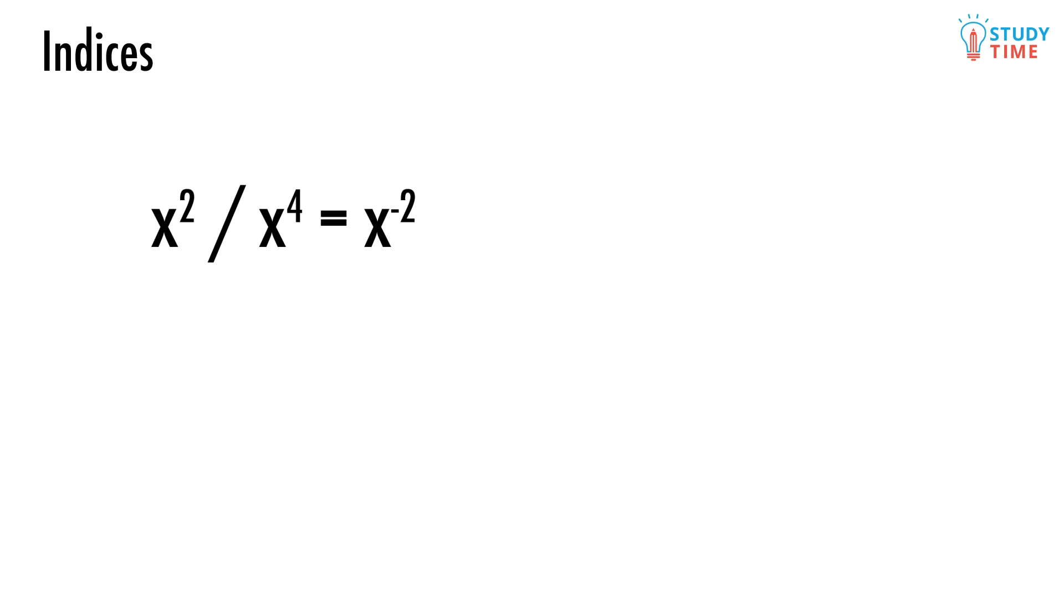In order to find out what exactly a negative index means, let's solve this problem using a longer method. We're going to start by writing it out in full. Now we can obviously cancel some of these x's out, right? We're going to take 2 away from the top and the bottom, which is going to give us 1 over x times x, or better still, 1 over x squared.